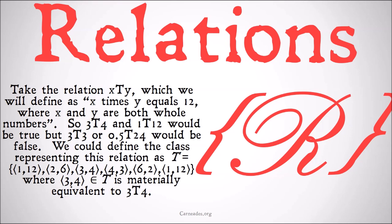We could define the class representing this relation as T being the class of the ordered pairs (1,12), (2,6), (3,4), (4,3), (6,2), and (1,12). Note we have to include both directions for all of those ordered pairs because they are explicitly ordered. The ordered pair (3,4) being a member of T is materially equivalent to 3 T 4, where T in italics represents the class and T not in italics represents the relation.